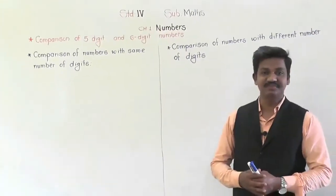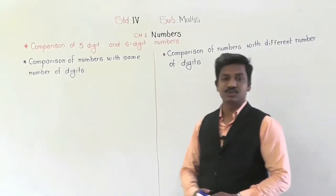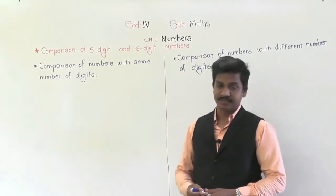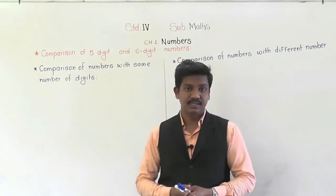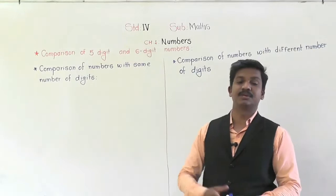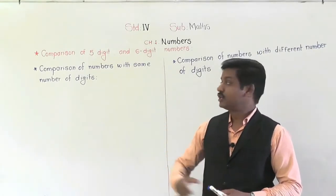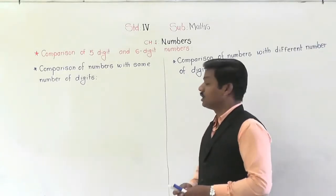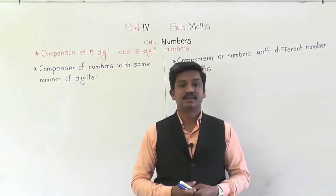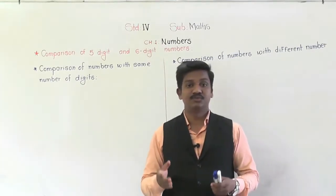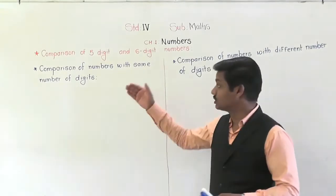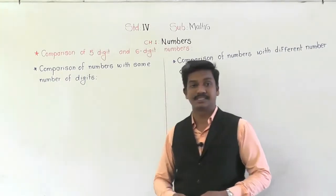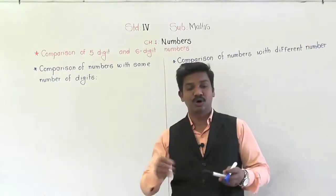Hello everyone, welcome to today's video lecture. In the first chapter, we are going to start the next concept: comparison of five digit and six digit numbers. Comparison means deciding which number is greater and which number is smaller. Before learning to compare two numbers, we are going to see where we can use this comparison of numbers and why we need to learn it. Let's see some examples.